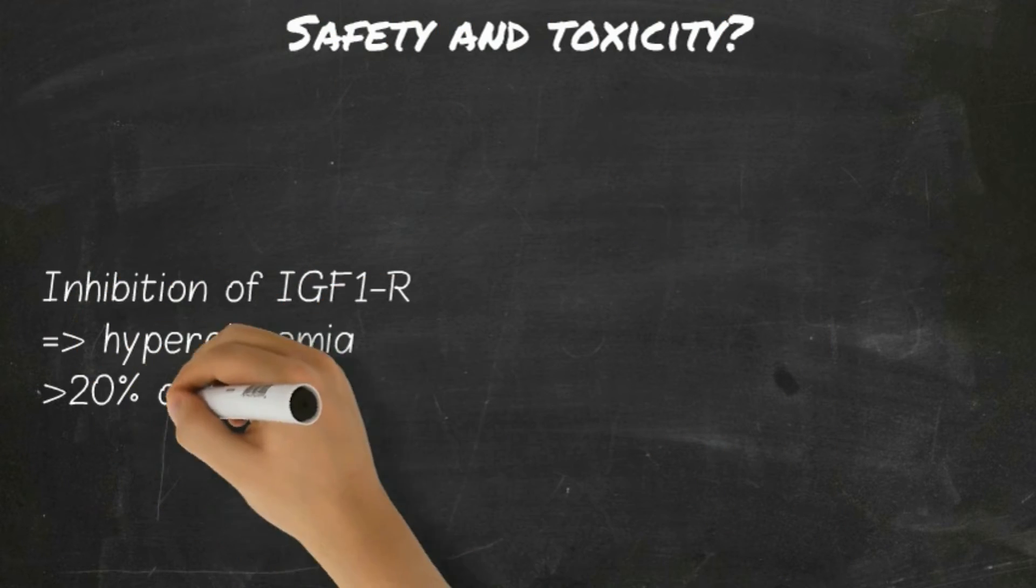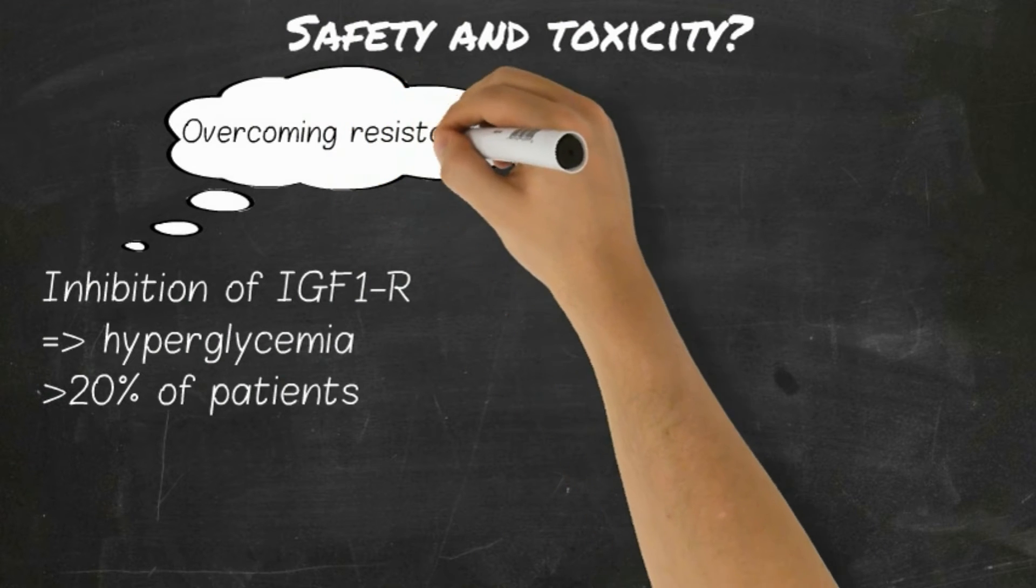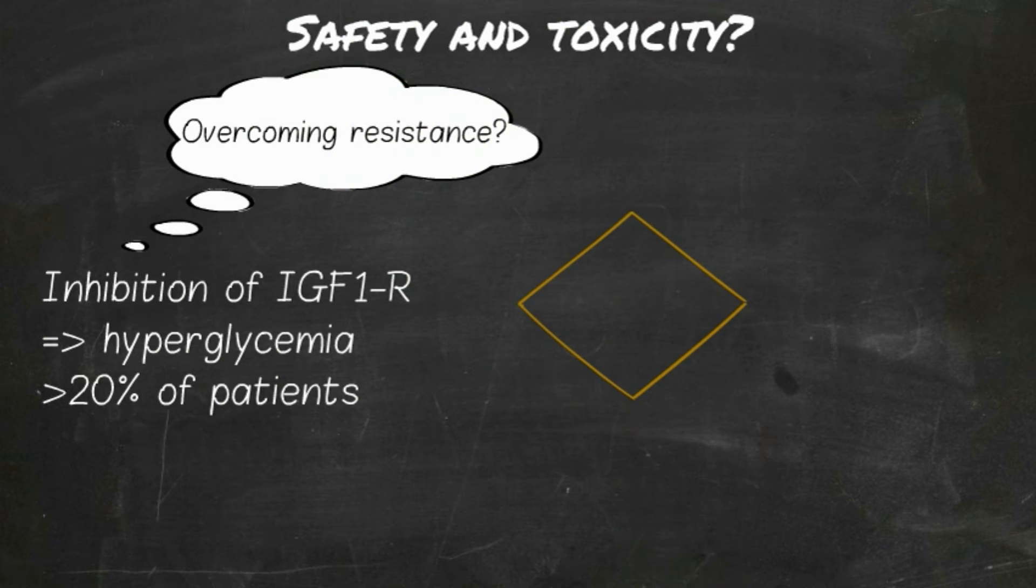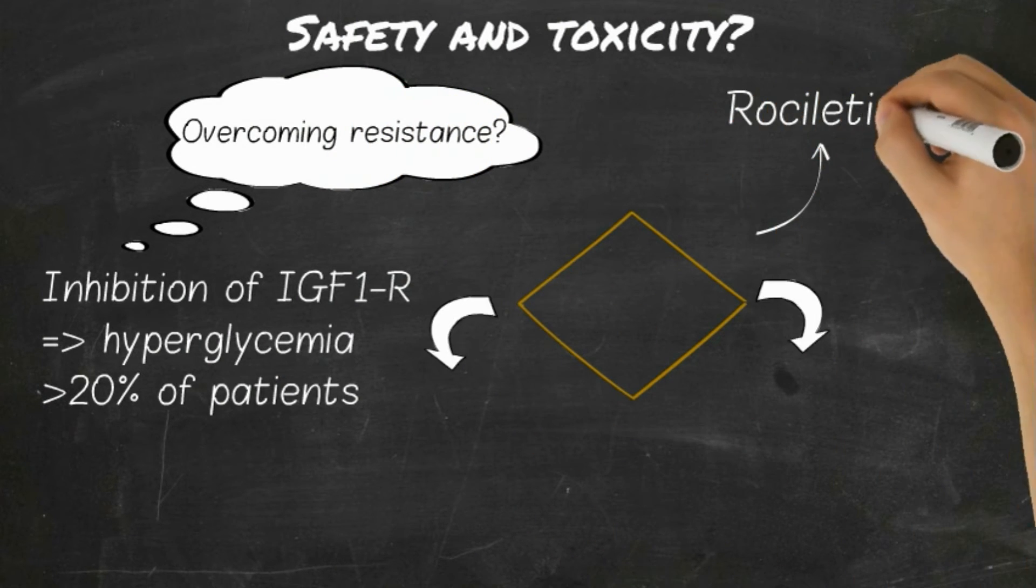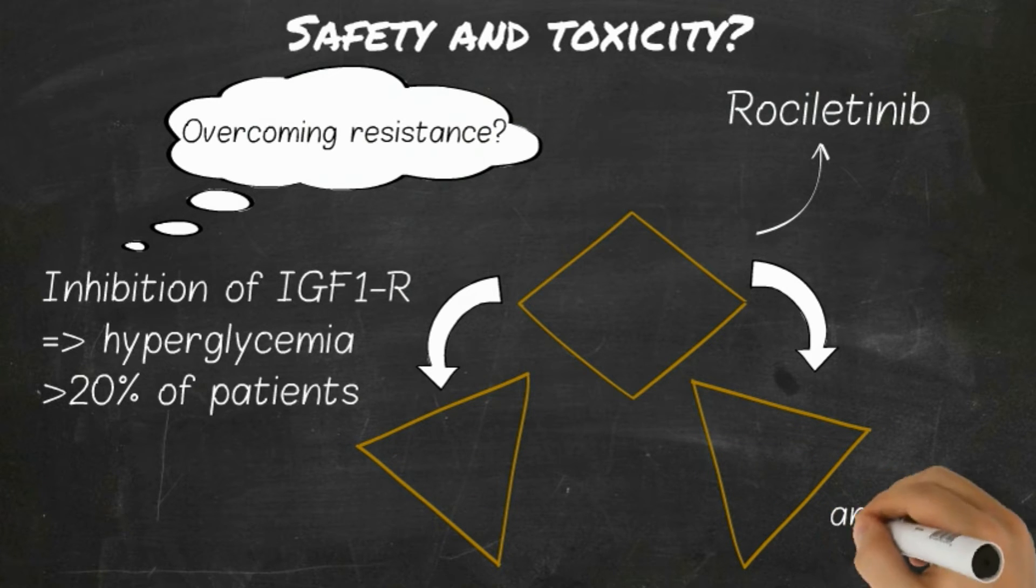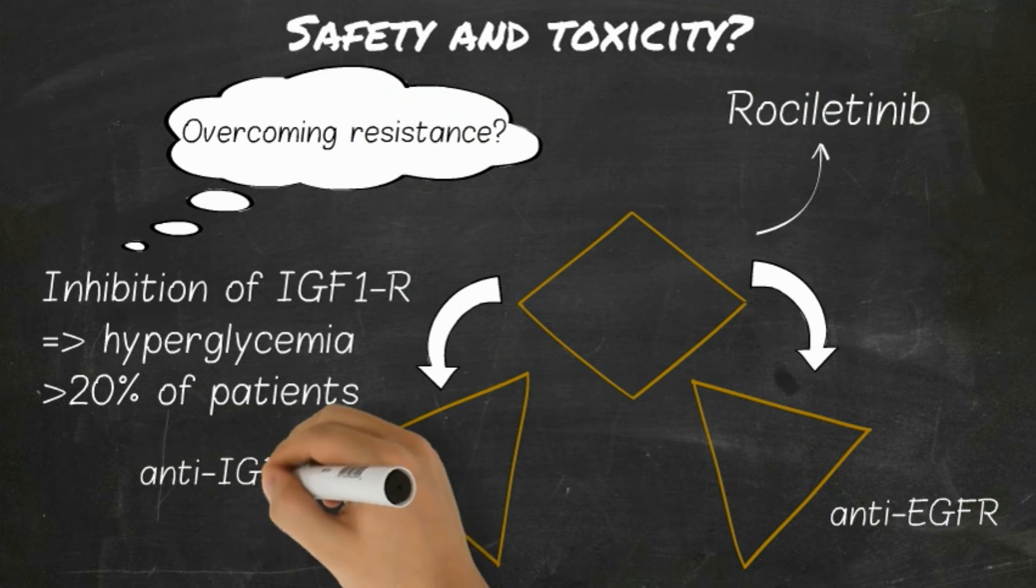Rociletinib was designed to also inhibit the insulin growth factor receptor 1 to prevent this resistance mechanism. Due to the long half-life of this metabolite, this led to hyperglycemia in over 20% of patients.